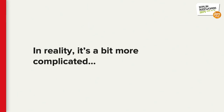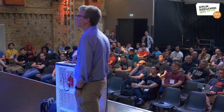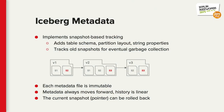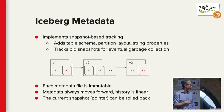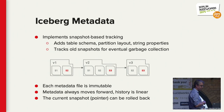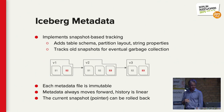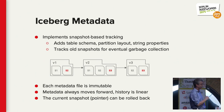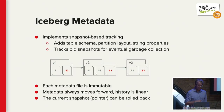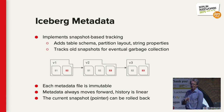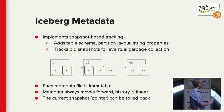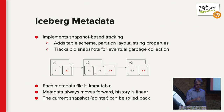In reality, it gets a little more complicated. Iceberg tracks the schema, the partition layout, and the properties of each of your files. It tracks old snapshots for garbage collection, because you need to know when you can delete old ones. Each metadata file is itself immutable, but it allows tracking more metadata about each file. It's a copy-on-write system, so you never rewrite the old data — you just make a new copy with updated information. And of course, you can roll back if things go badly.